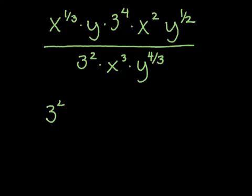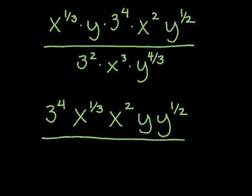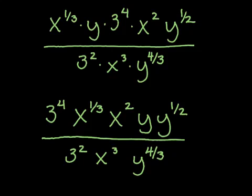I'm going to put the coefficients first — the numbers — so 3 to the 4th. Next I'll put all the x's together: x to the 1/3 and x squared. Then all the y's: y and y to the 1/2. All of that's being multiplied, so I just rearranged for convenience. In the bottom, matching the same order: 3 squared times x cubed times y to the 4/3.